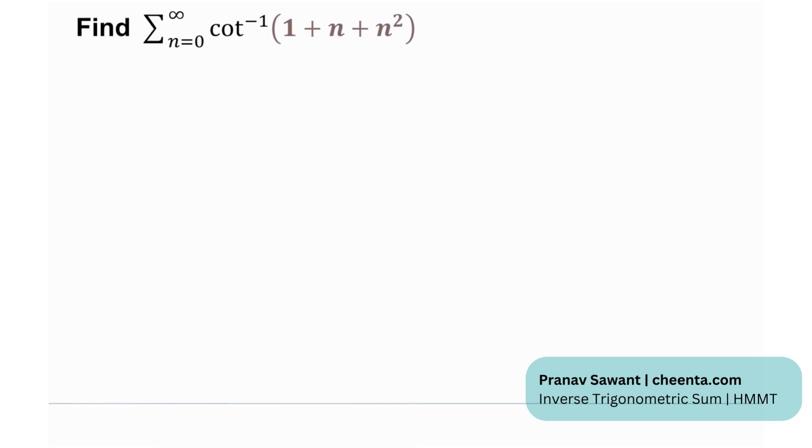Okay, so we need to find the summation. We have the sigma cotangent inverse of 1 plus n plus n squared. Very fascinating. But before we really jump into this, I want you to know a couple of interesting properties about inverse trigonometric functions.